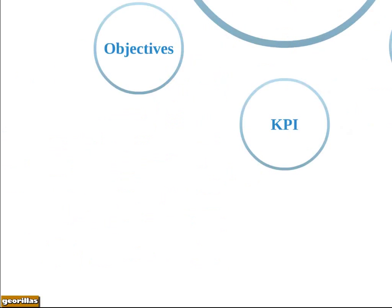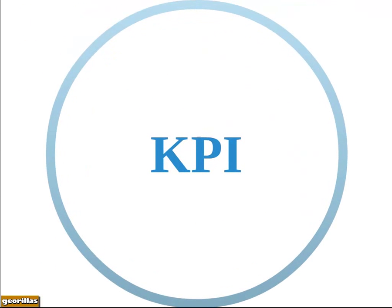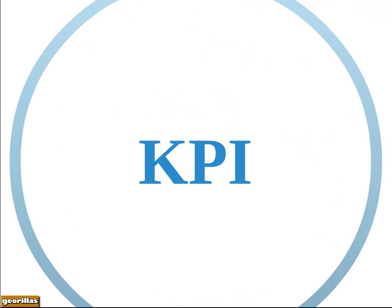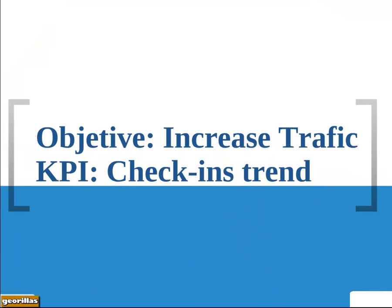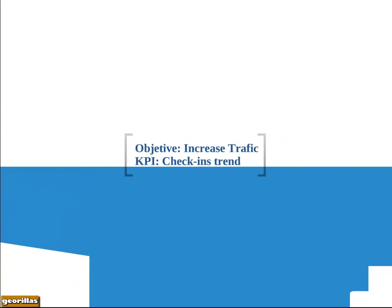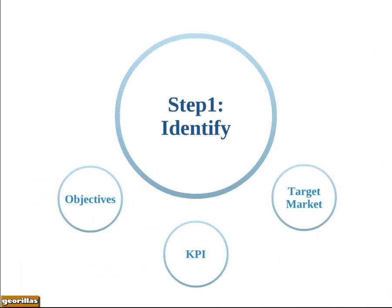Once objectives and target markets are identified, we need to identify key performance indexes — those are the parameters that will measure our campaign success. For example, if we are looking to increase the number of visits, the KPI will measure the trend on check-in numbers. This is our first step: Identify.